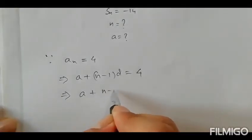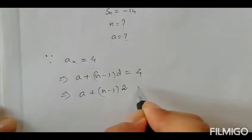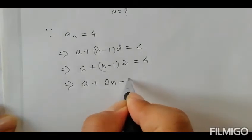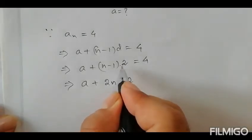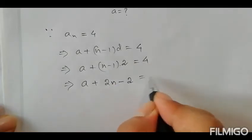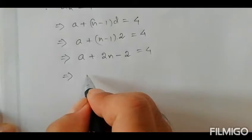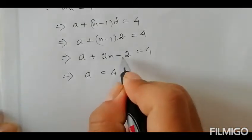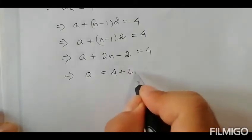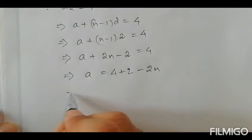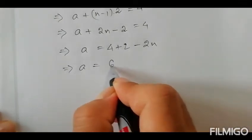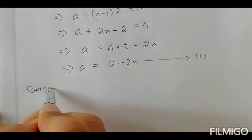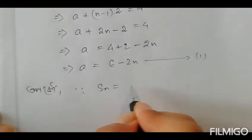For question 8, we have a plus n minus 1 into d. Given a_n equals 4, d equals 2. We need to find n and a. So we can write a plus n minus 1 into 2 equals 4, which gives us a equals 6 minus 2n.